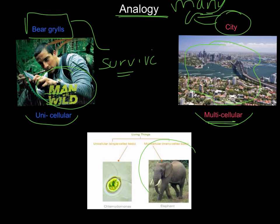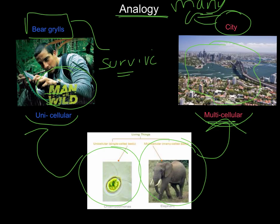The elephant would be an example of multicellular. Elephants, plants, and other animals would all be multicellular. Whereas bacteria, just one cell in size, would be an example of unicellular.